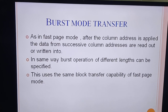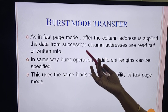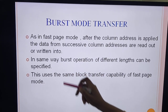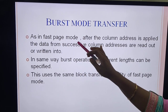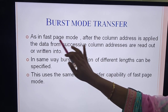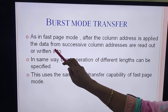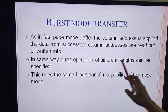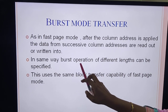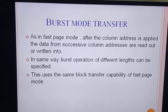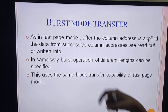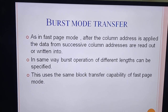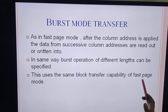Next is burst mode transfer. Burst refers to a collection of words. This is very similar to the fast page mode we learned in asynchronous DRAM — after the column address is applied, data from successive column addresses are read out or written into. In the same way, burst operations of different lengths can be specified. You select a particular row, and once the column address is given, in burst mode the successive columns are selected and either read out or written into, using the same block transfer capability as fast page mode.